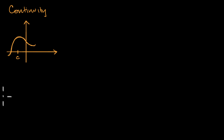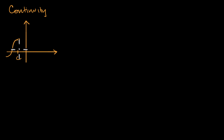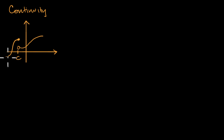But if I had a function that looked somewhat different — if I had a function that looked like this, where it is defined up until a certain point, then there's a bit of a jump, and then it goes like this — this function would be very hard to draw going through x equals c without picking up my pen. I would have to pick it up and move back down, and so that is an intuitive sense that we are not continuous in this case.